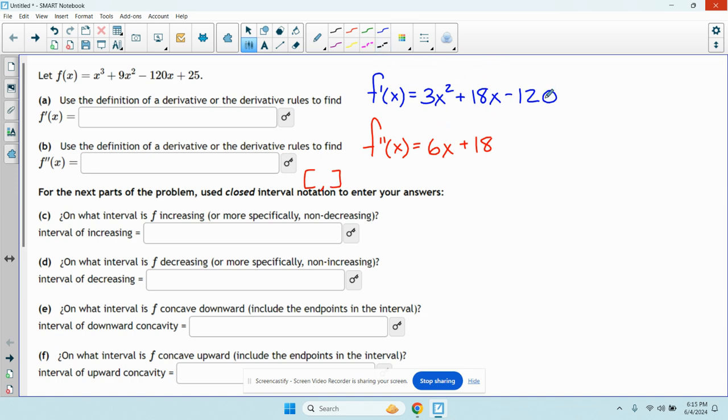So we need to figure out for what values is the derivative zero. Because where the derivative is zero, I know the function is going from increasing to decreasing or vice versa, decreasing to increasing. So I'm going to set this first derivative equal to zero.